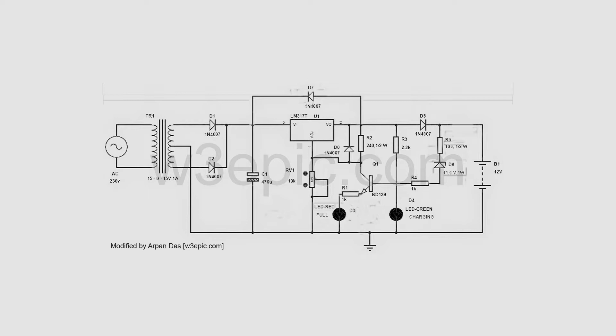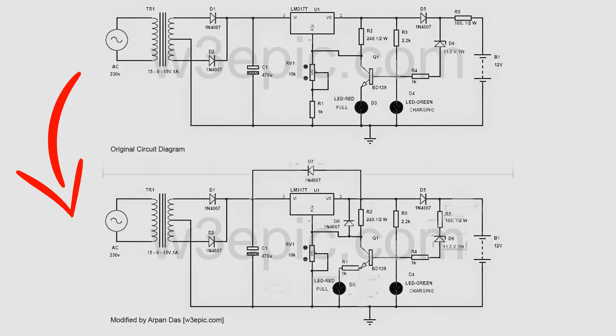I have made few modifications to it. My modified version is working better than the original one. You can see my modified version here. Here I have moved position of R5, then I removed R1 from the potentiometer. I have added a 1k resistor to protect D3, that is the red LED, and I have added two extra diodes to protect the LM317 IC from the reverse voltage.